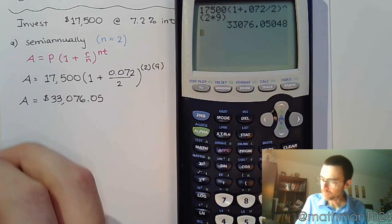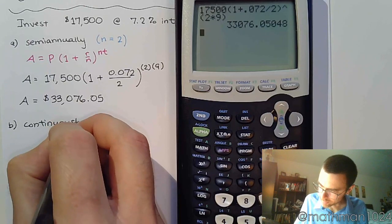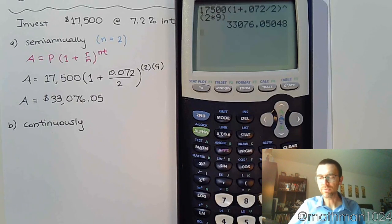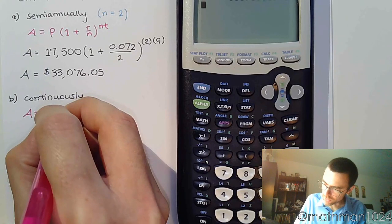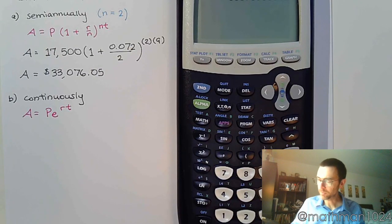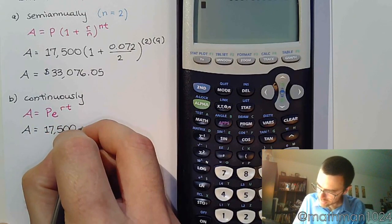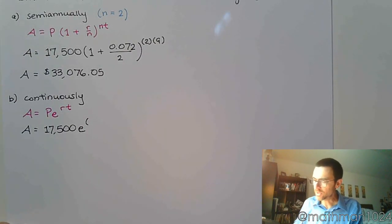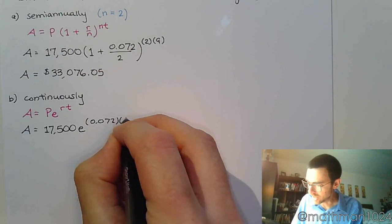So that was semi-annually. What if I want to compound this continuously? Keep in mind that continuously does not have these discrete events. It's happening all the time. It's an entirely different formula. The formula is A equals P times e raised to the rt. Keep in mind that that rt power is only connected to the e, not the P. So my final amount is 17,500 times e raised to the r which is 0.072 times t which is 9.